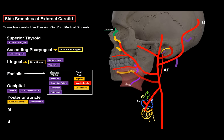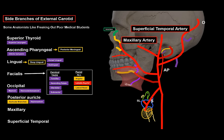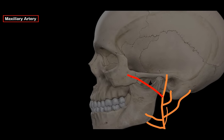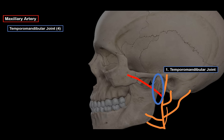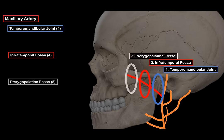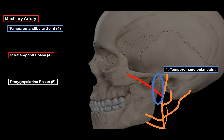The two terminal branches of the external carotid are the maxillary artery and the superficial temporal artery. The maxillary artery originates behind the neck of the mandible, initially embedded in the parotid gland, then continues towards the pterygopalatine fossa. It is divided into three parts by anatomical location: the first behind the temporomandibular joint, the second in the infratemporal fossa, and the third where it terminates in the pterygopalatine fossa.